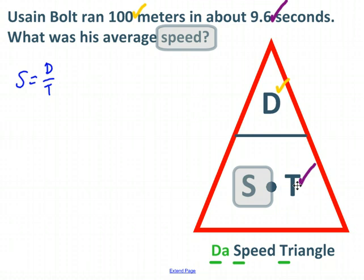Plugging those in, distance divided by time, there's my distance, 100 meters, and there's my time, 9.6 seconds. Neither of these units will cancel, but that's okay because meters per second is a perfectly good unit for speed. 100 divided by 9.6, my calculator tells me that's about 10.4 meters per second, and that is how fast Usain Bolt ran back in the Olympics.